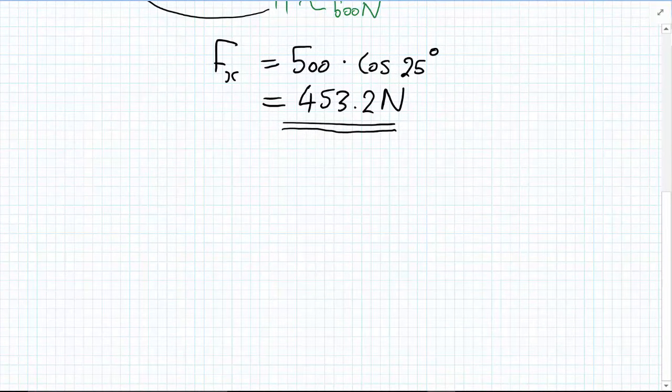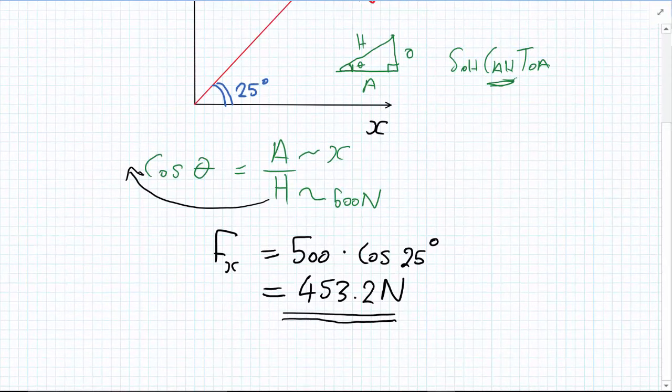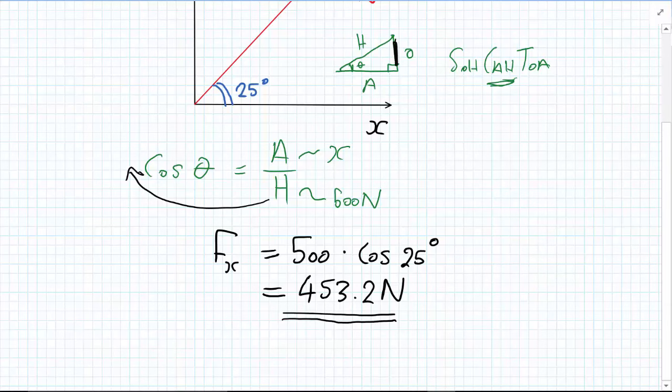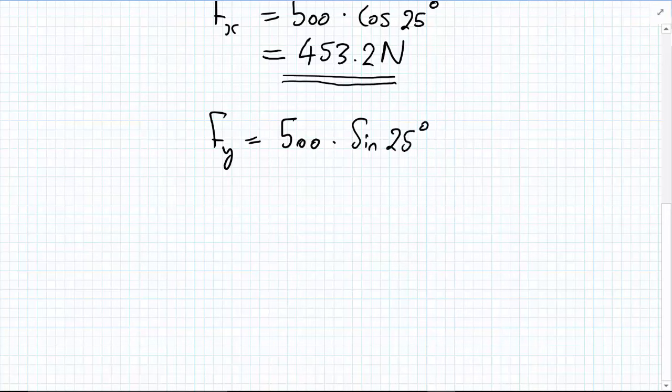And we do the same in the y direction. Use SOHCAHTOA to identify which one of the rules I'm using. So in this case, I'm trying to find the y vector, which is the opposite, and I already know the hypotenuse, which is the known vector. So I'm using the sine rule. And again, write down Fy equals 500, the hypotenuse, times by the sine of the angle, which is 25 degrees.